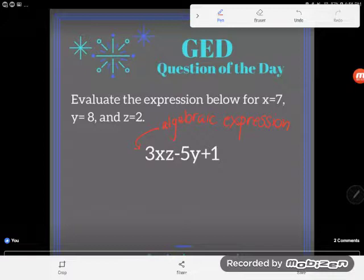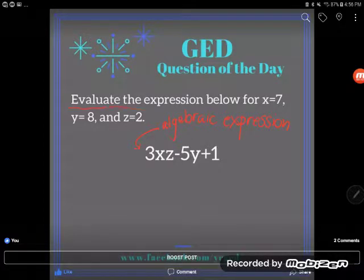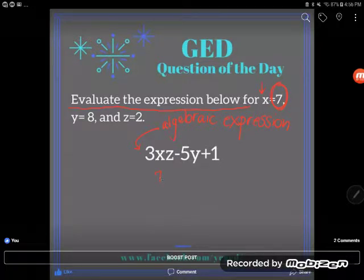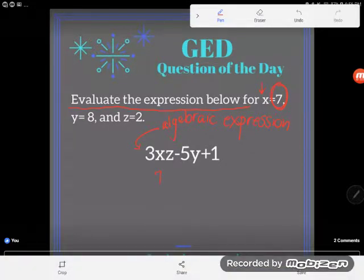It says evaluate the expression below for x equals 7. X is not a mystery, x is 7. Where you once saw x in the problem, you can put in a 7. Okay, so I write 7 right underneath x.